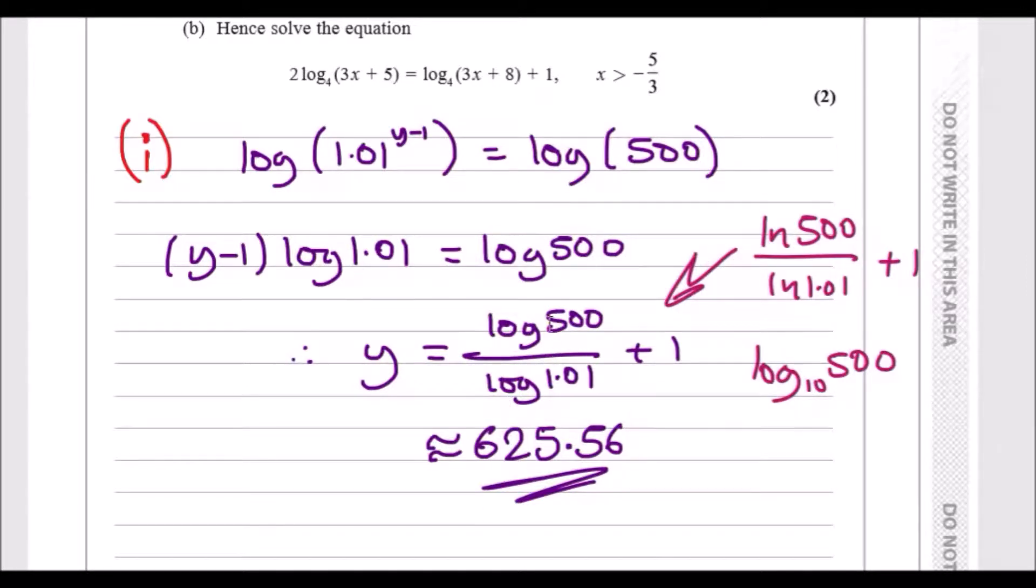If you're not sure how to type the log button, you could use the alternative ln 500 over ln 1.01, or equivalently you could use log₁₀ 500 over log₁₀ 1.01 plus one to give us the answer. Just be careful how you input this properly.